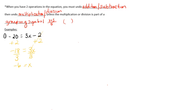We can verify by substituting: 3 times negative 6 is negative 18, minus 2 gives negative 20. That confirms our answer. We added 2 first, then divided by 3.